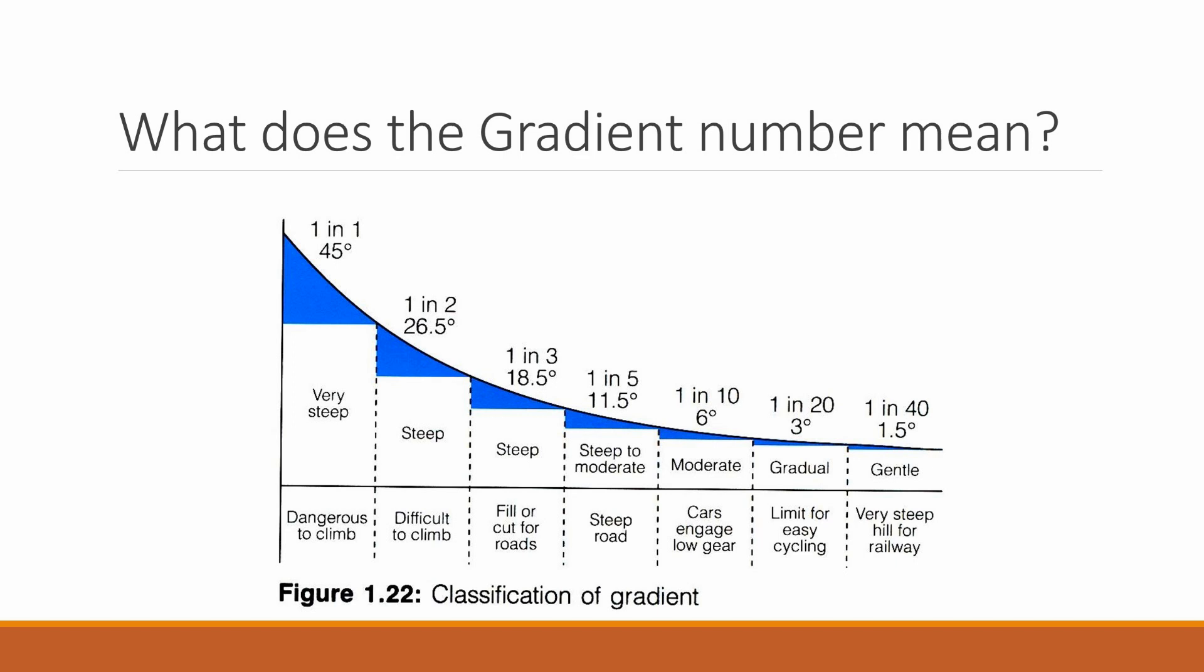And on this slide, we can see what the gradient number actually means. The previous one we had was 1 in 12, which we can see from this classification means that the hill slope is going to be moderate to gradual. It is going to be quite easy to climb or to walk up. But if you're in a car, you're going to have to engage your low gear. And as we go up to the left-hand side of this classification gradient, we can see that it becomes very steep if it's a 1 to 1 or a 1 to 2 gradient.